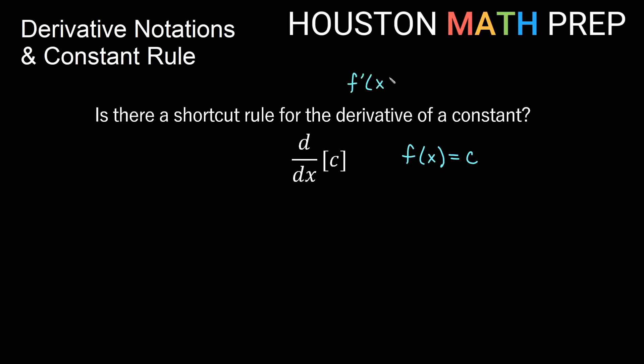So we're trying to find f prime of x is what we've been saying all along, right? So remember this f prime of x has a limit definition. That is the limit as h approaches 0 of f of x plus h minus f of x all over h.